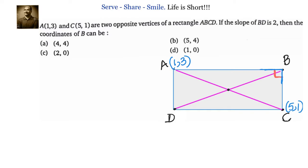If you want to solve this problem on your own, I will give you two hints. Hint one: AB is perpendicular to BC. Take B's coordinates as X1, Y1. You get one equation in terms of X1, Y1 from the condition AB perpendicular to BC.